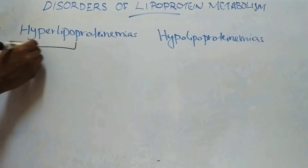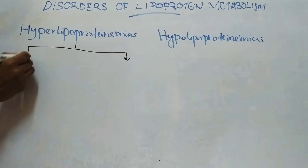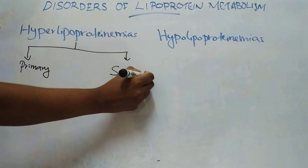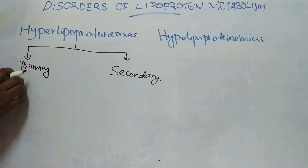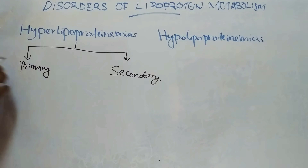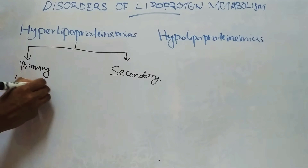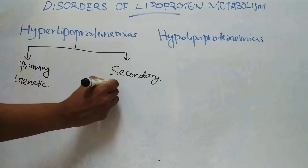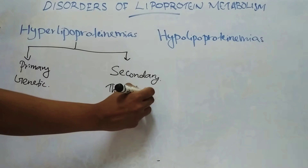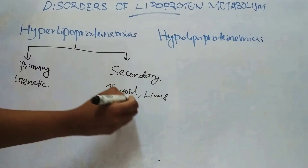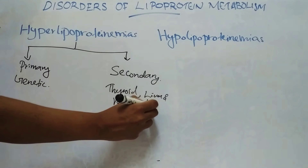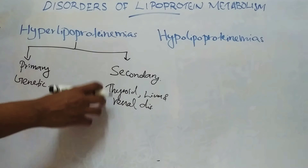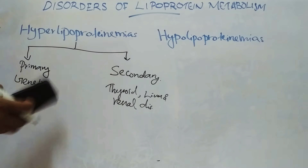Hyperlipoproteinemias are further divided into primary and secondary. Primary hyperlipoproteinemias are genetic disorders. Secondary are due to underlying disease processes, for example thyroid, liver, and renal diseases.